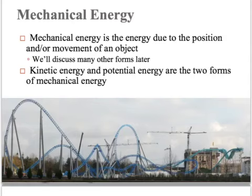The two forms of mechanical energy are kinetic energy and potential energy. You've probably had some exposure to these. Kinetic energy, as you might have guessed, is the energy of movement. And potential energy is the potential to do work — it can do work based on its position.